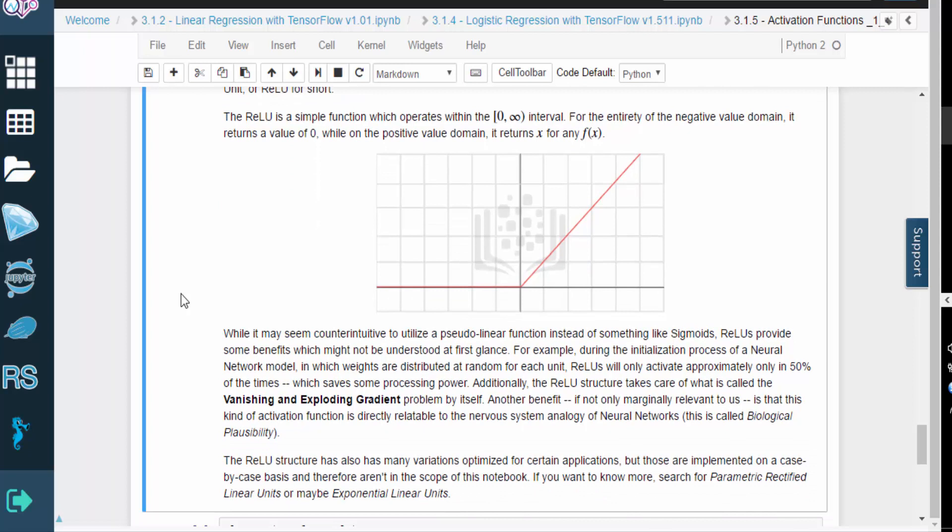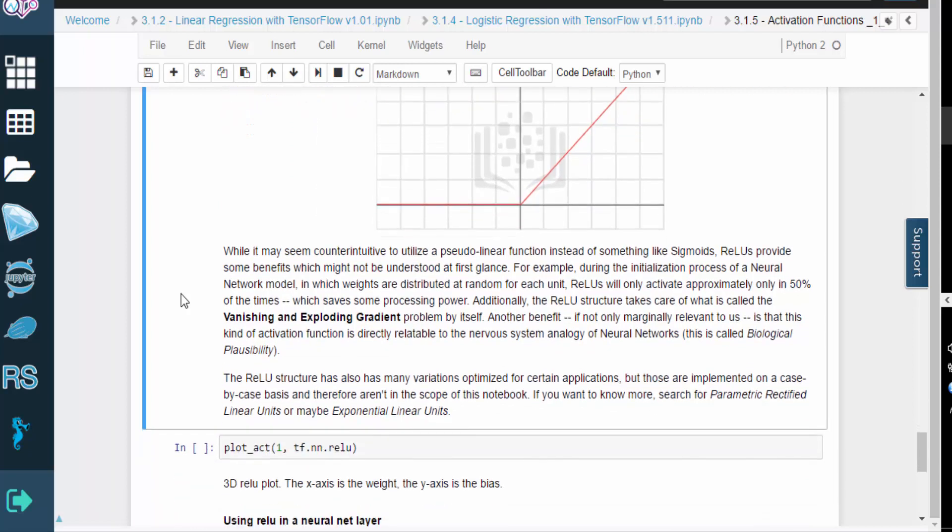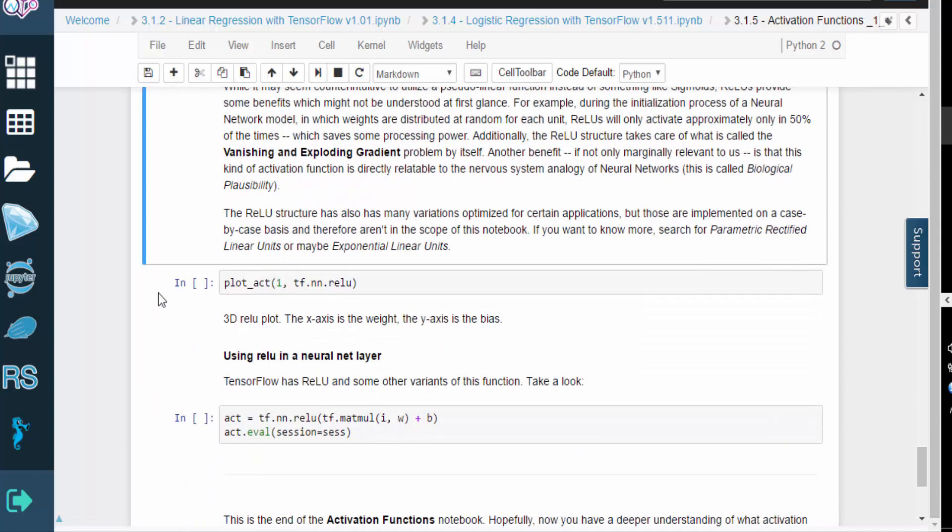It may seem counterintuitive to use a basic pseudo-linear function over something more complex like a sigmoid. But RELU provides some important benefits that might not be obvious at first glance. For example, during the initialization process of a neural network model, weights are distributed at random for each unit. RELU will only activate approximately 50% of the time, which actually saves some processing power. The RELU structure also solves the vanishing gradient and exploding gradient problems, both of which are well-known issues with the training process. And as a marginal benefit, this type of activation achieves biological plausibility, because it's directly relatable to the common biological model of a neuron.